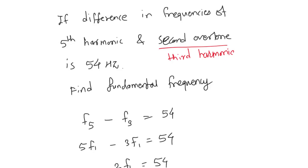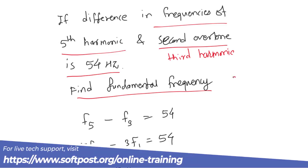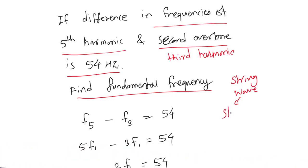In this video, we'll solve a problem correctly. If the difference in the frequencies of the fifth harmonic and the second overtone is 54 hertz, find the fundamental frequency. This question is based upon string waves, specifically standing waves. What they have given is the difference in the frequencies.